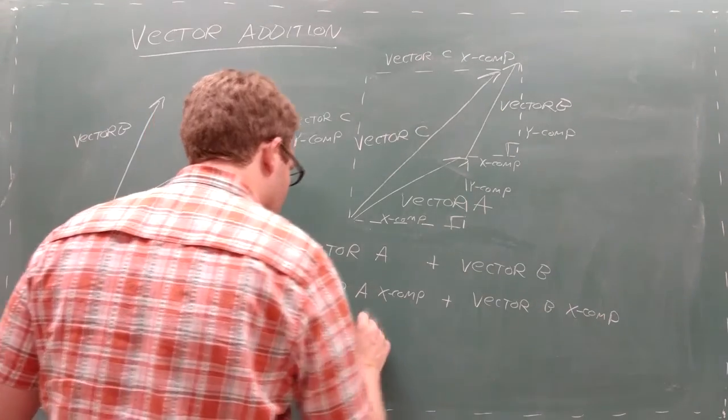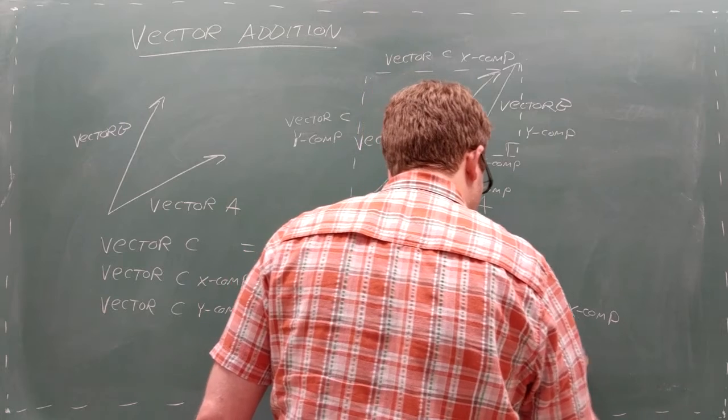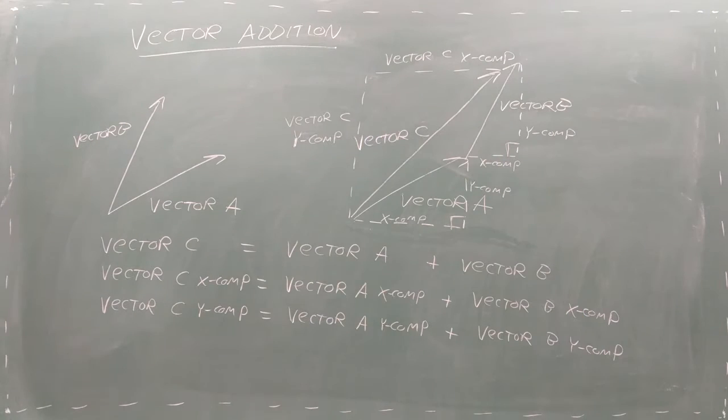So, when you want to add two vectors visually, you draw them head to tail. When you want to add two vectors mathematically, you add their matching components.